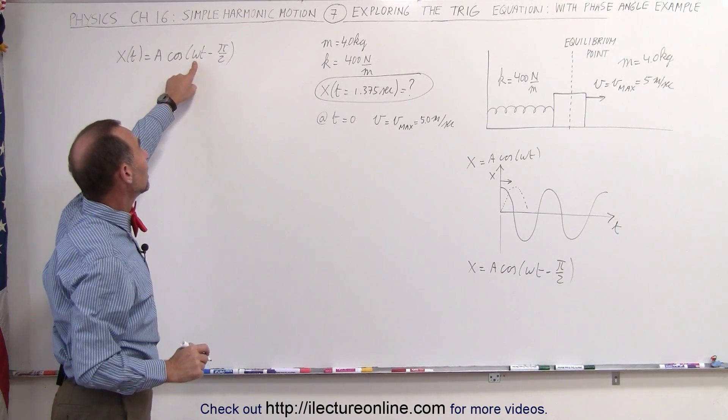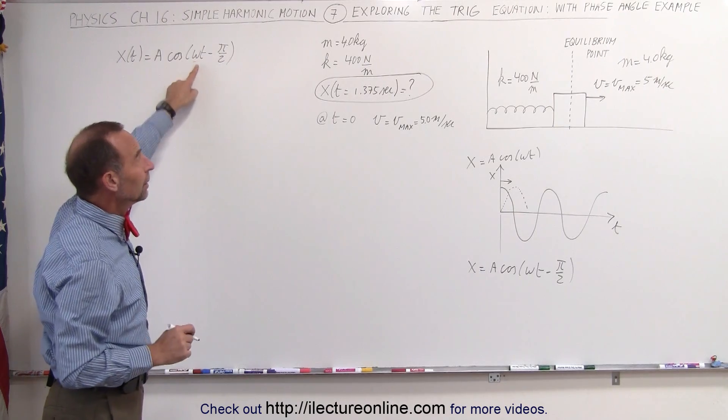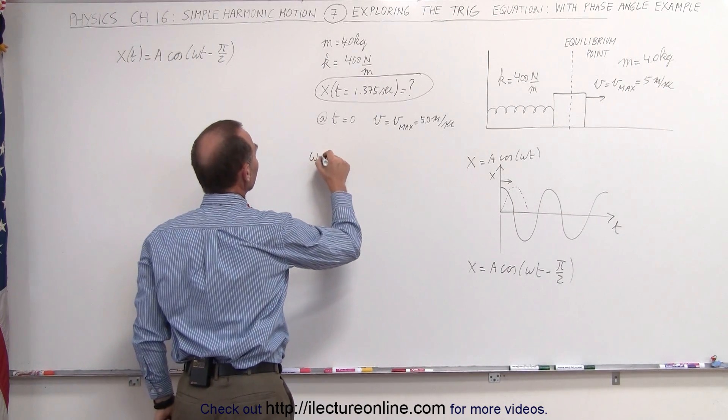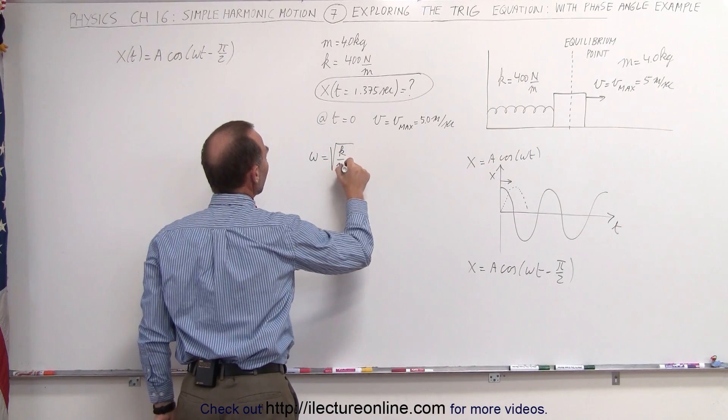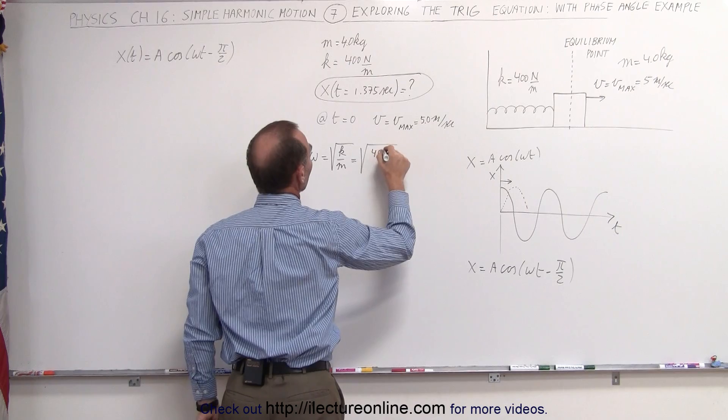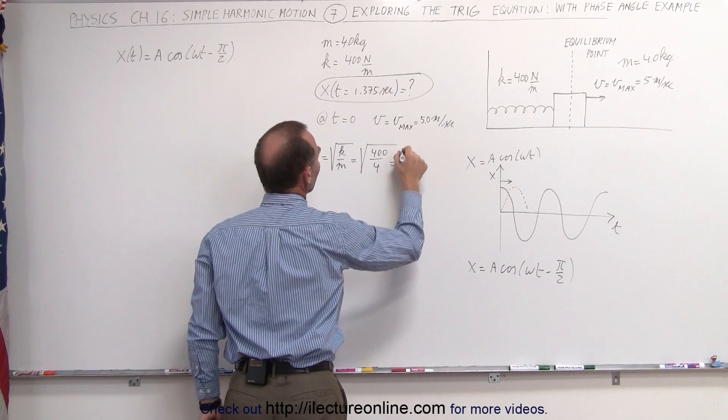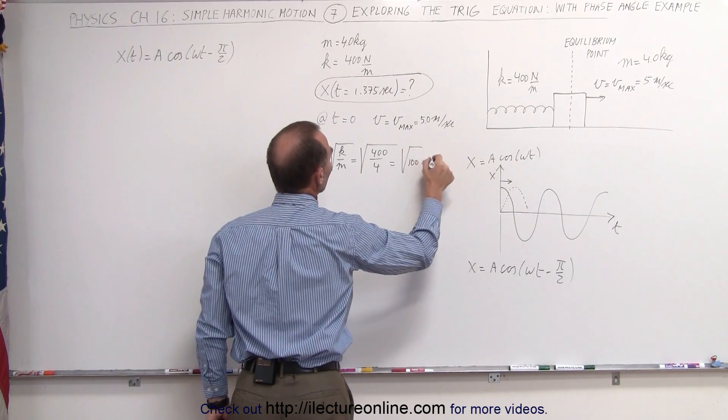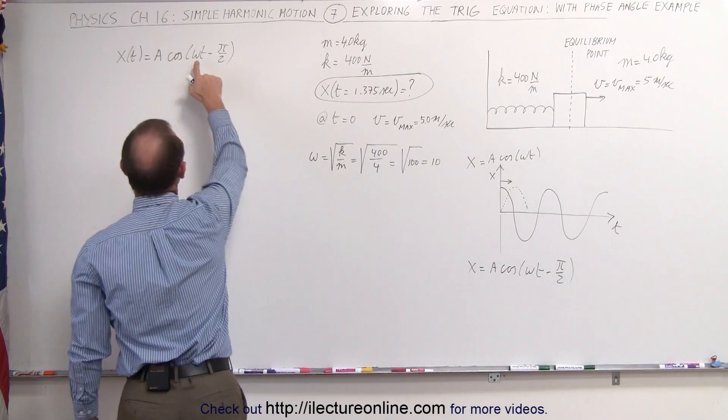Of course we still need some value for omega. We know that omega equals the square root of k over m, in this case that's equal to the square root of k which is 400, divided by m which is 4, that's equal to the square root of 100, which equals 10. So omega in this case is 10.